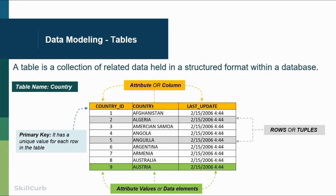Tables are one of the foundational structures in data modeling — it's a collection of related data in a structured format. I've given an example of a country table. The stuff highlighted in orange are basically the attributes or columns: country ID, country, and last updated column. Country ID lists individual unique IDs, country lists contextual information, and there's a time value for last updated. So these are columns or attributes.